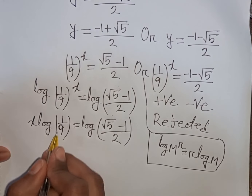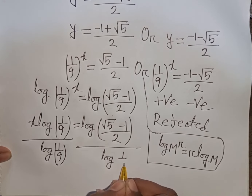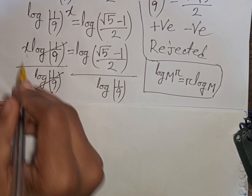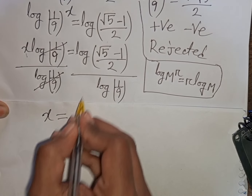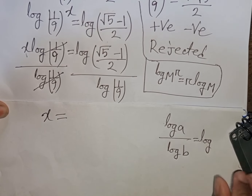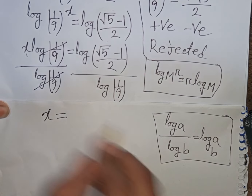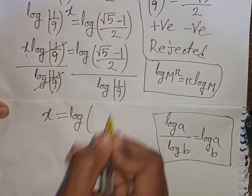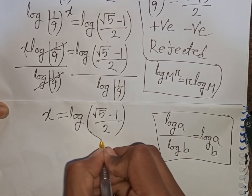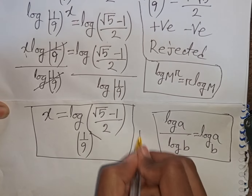We need the value of x, so divide both sides by log(1 over 9). The log(1 over 9) terms cancel. Applying the change-of-base formula log a divided by log b equals log base b of a, x equals log base (1 over 9) of (square root of 5 minus 1) over 2. This is our final answer for the first problem.